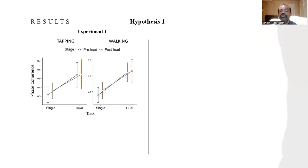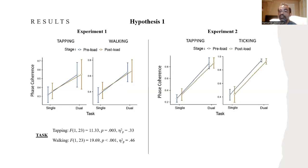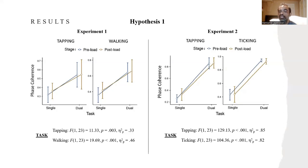Results revealed a significant increase in phase coherence during dual tasks compared to single tasks, supporting hypothesis one for experiment one. The same was true for experiment two. In both experiments, the phase coherence during dual tasks was significantly higher than during single tasks. No significant difference in phase coherence was found between preload and postload stages. No significant interaction effect was found between single tasks, dual tasks, and preload/postload stages.